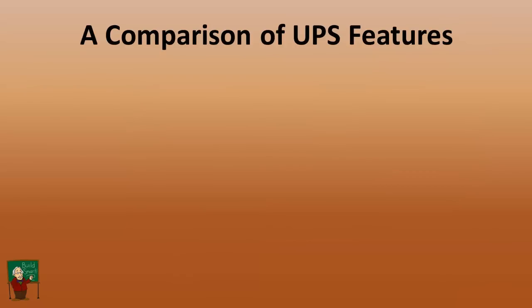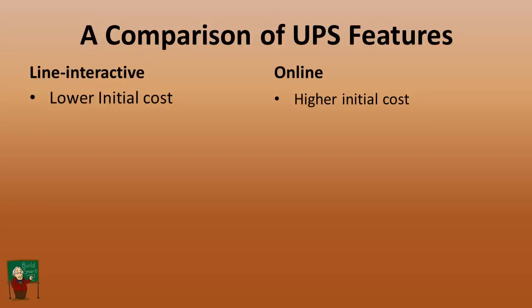So now we'll look at a comparison of the features of these two principal types of UPS, which would be the line interactive and the online. The line interactive is very little more expensive than the standby type. So most of the ones, particularly in commercial use, are the line interactive at the lower end. The line interactive has a lower initial cost than the online. It's because it doesn't have as large components in terms of the rectifier, and it's not working the same amount of time. The line interactive is typically larger physical size. Online would usually be somewhat smaller.